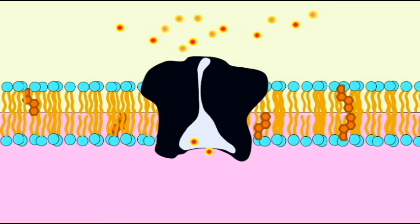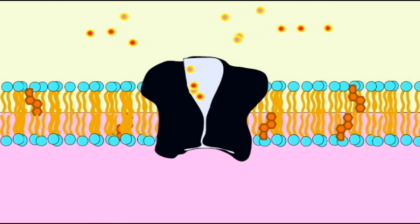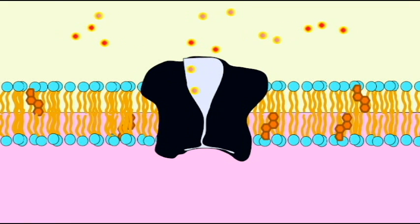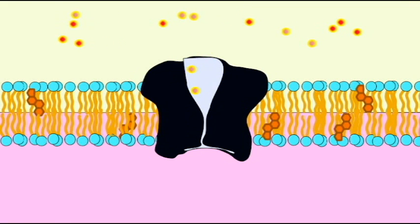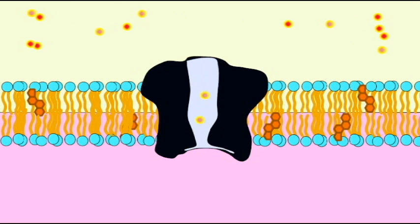This sodium gradient is then used to power the removal of hydrogen ions or acid—they are the darker red—and as sodium enters the cell, the hydrogen ions, the acid, is pumped out of the cell.